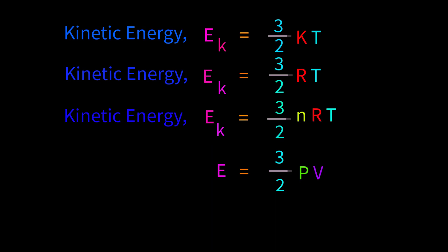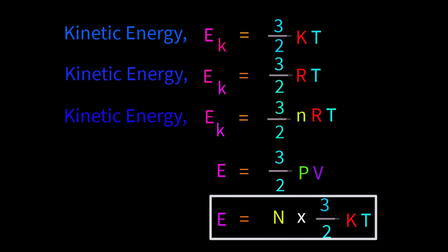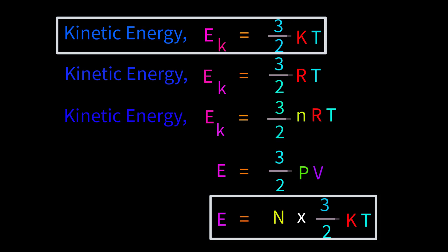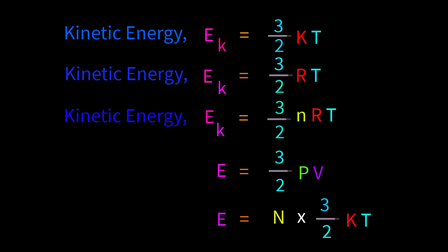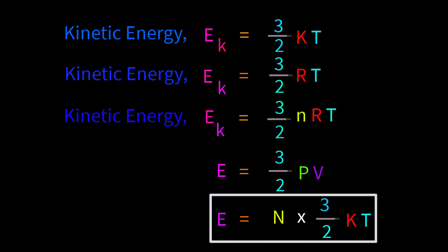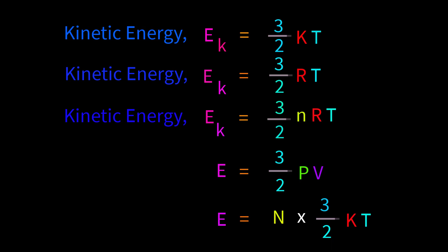Another equation is E equals capital N times 3/2 kT, where capital N means number of atoms or number of molecules. This equation and the first equation Ek equals 3/2 kT are exactly the same — I solved the first problem without explicitly writing capital N. If you want, you can solve that problem using this form. After watching this tutorial, hopefully all of you will be able to determine any types of kinetic energy related math problems by yourselves. Thanks a lot for watching.